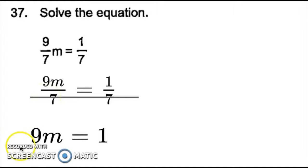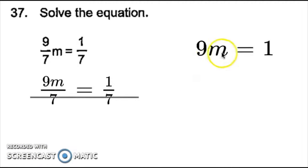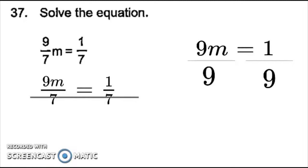So now I will solve 9m equals 1. If 9 is next to m, to get m by itself, I have to do the inverse operation. When it's next to it, it means multiply, so the opposite of multiplying is dividing. So I divide both sides by 9. When I divide by 9, I'll end up with 1 over 9, which equals m, and that would be the answer to number 37.